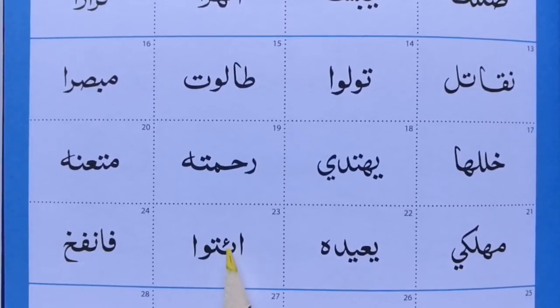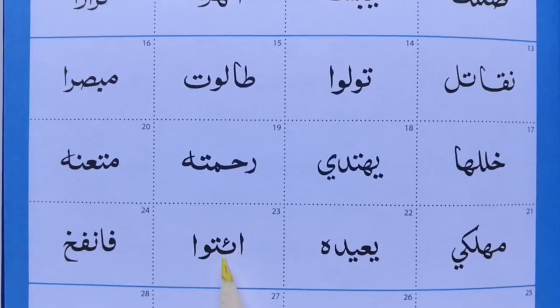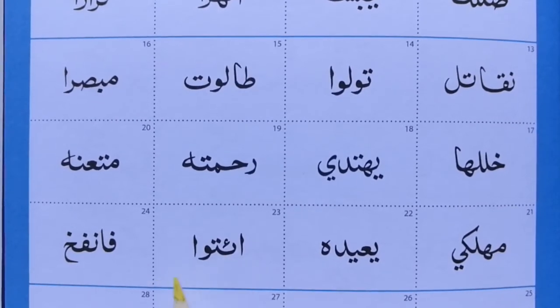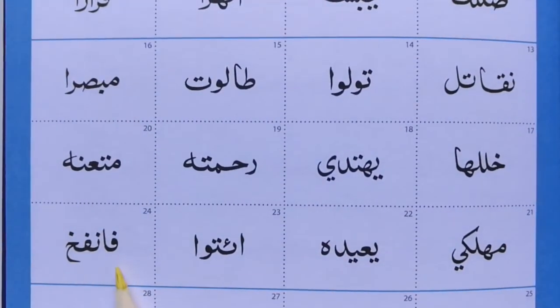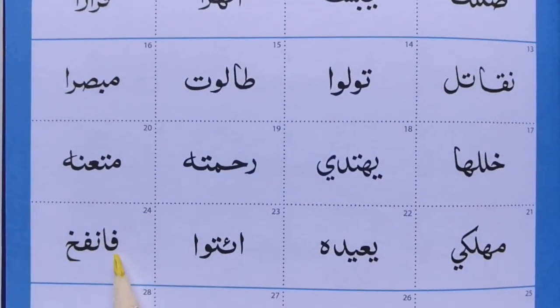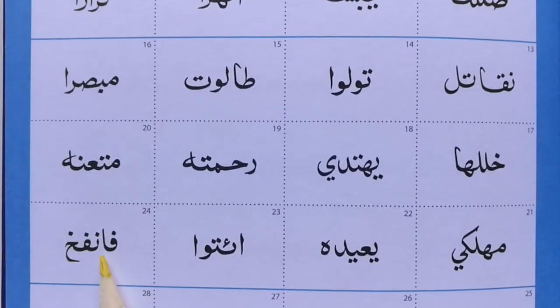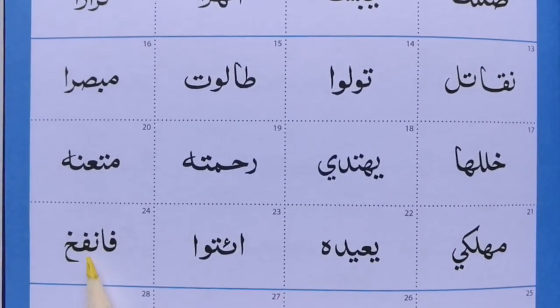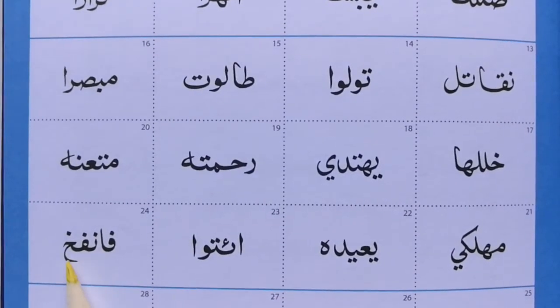It'll just sit inside there like a little chair for the little Hamza. Okay. Next one: Fa, Alif, Noon, Fa, Kha.